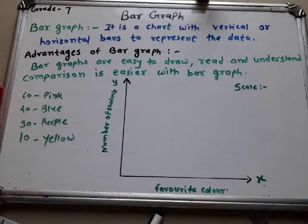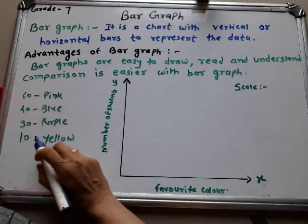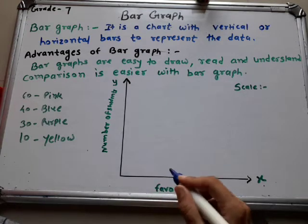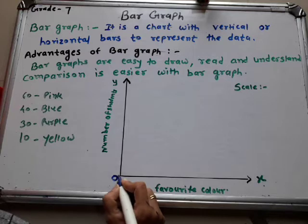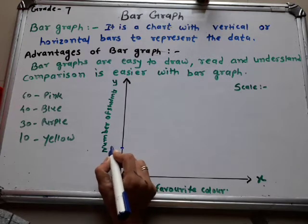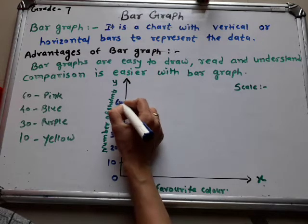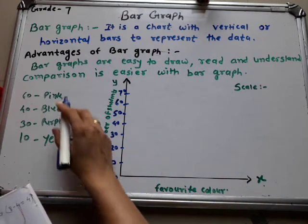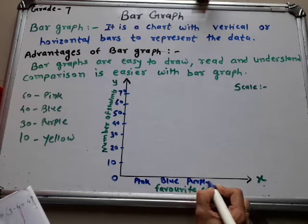You have to draw the bar graph using a suitable scale — this is very important and is worth one mark. Write the scale, then write the numbers starting from 0: 10, 20, 30, 40, 50, 60, 70. Then write the colors on the x-axis: pink, blue, purple, and yellow. Using the scale, draw the bars at the correct heights and leave equal spacing between each bar.